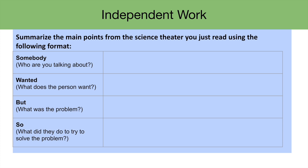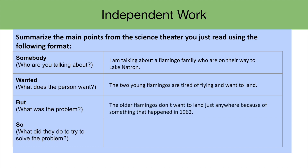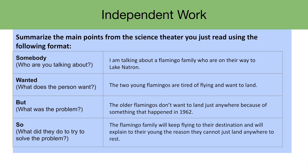Somebody — who are you talking about? I am talking about a family of flamingos who are on their way to Lake Natron. Wanted — what does the person want? The two young flamingos are tired of flying and want to land. But — what was the problem? The older flamingos don't want to land just anywhere because of something that happened in 1962. So — what did they do to try to solve the problem? The flamingo family will keep flying to their destination and will explain to their young the reason they cannot just land anywhere to rest.